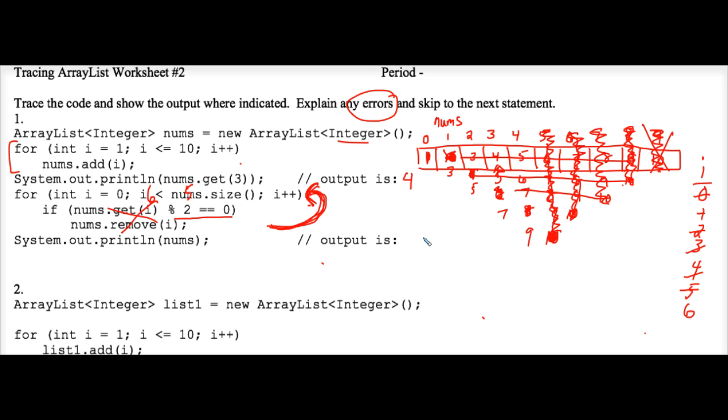So we end up with a 1, a 3, a 5, a 7, and a 9. That's your answer for this exercise: 1, 3, 5, 7, 9.